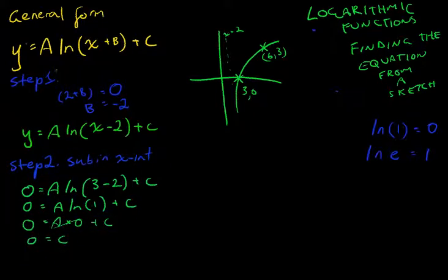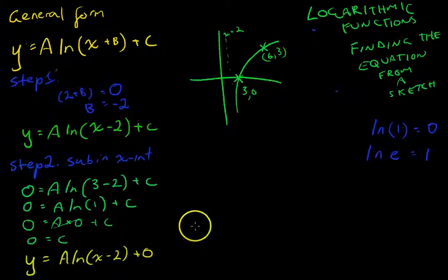So step two has actually found our C value for us. So we can write that in. So now we know that y equals A ln(x minus 2) plus 0. Now obviously we're not going to leave our plus 0 in there, so we'll just get rid of it. So we know that this function takes the form y equals A ln(x minus 2).